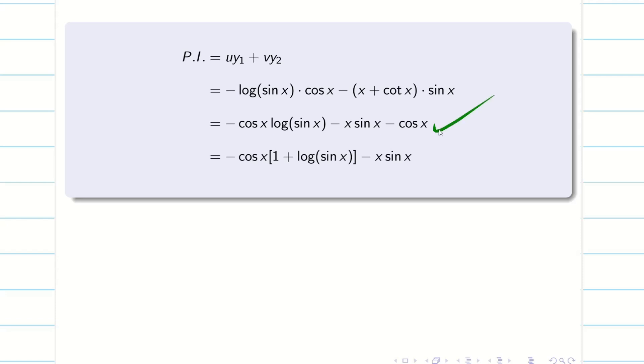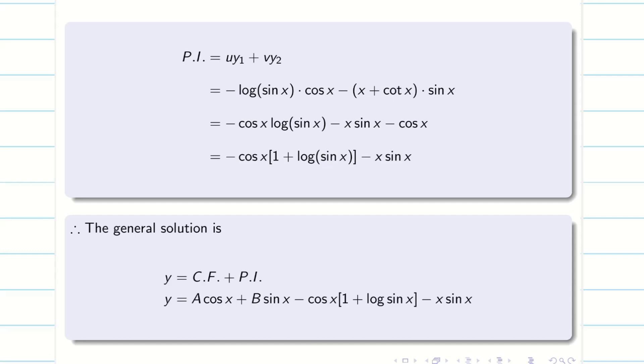I think you can stop here. You don't want to do further simplification. Now the general solution is y = CF + PI. We know my CF is a cos x + b sin x, then PI just now we found. And the problem gets over. Hope you understand, it is a very easy problem. Just try to understand and write it in a simplified way.